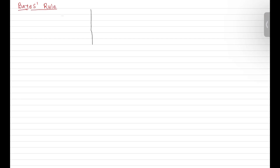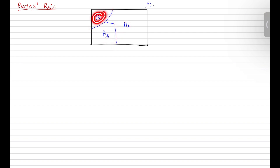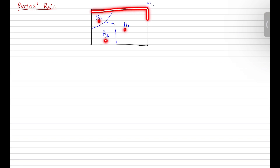We have a sample space with different partitions that are disjoint to each other. These partitions are nothing but subsets — you can call them events or different scenarios. Since they are disjoint, taking the union of these three events or scenarios covers the entire sample space. That means if you take the union of these three events, you get the complete sample space.